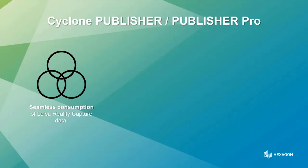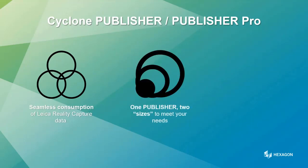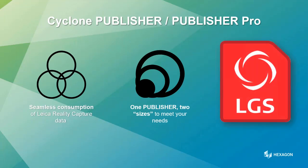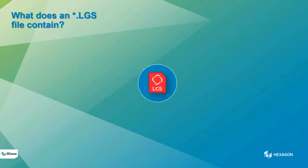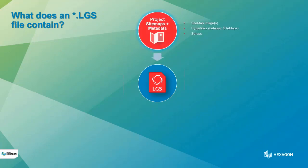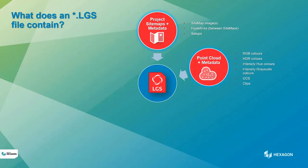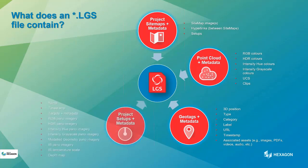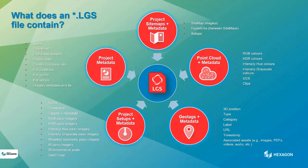Publisher gives seamless consumption of Leica Reality Capture data. We have one publisher in two sizes — standard and pro — and we're moving towards a complete project in a single, simple file. That's our LGS format file. An LGS file is a single, singular file. It contains all the project sitemaps and metadata, all the point cloud information and any metadata, all the geotags and assets for any project, all the setup information, panoramic imagery or HDR imagery, and project metadata itself.